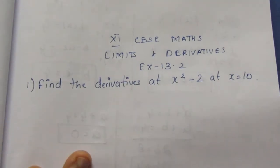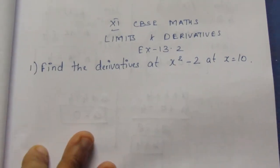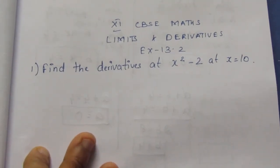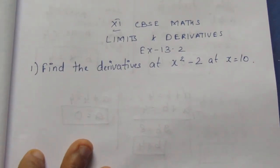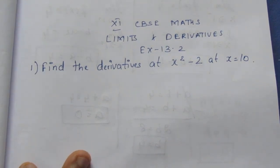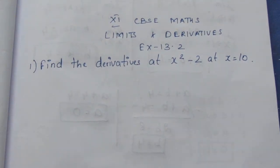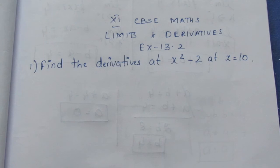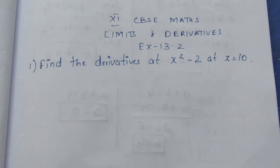Hello you guys, I am Aykli. Today we are doing CBC Maths, Limits and Derivatives, Exercise 13.2. Let's look at the first sum in the video: find the derivative of x squared minus 2 at x is equal to 10.